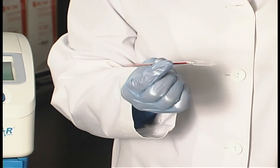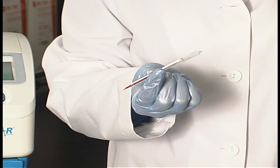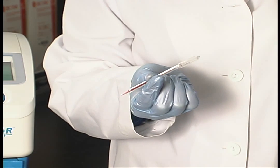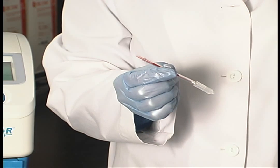Now, tilt the tube so that the blood flows down into the area of acrodine orange. Be careful to avoid contact with the white stopper, as this may make mixing the sample more difficult.